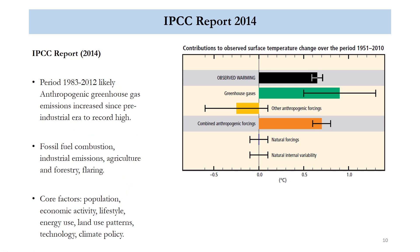The report also shows us what the relative contributions to temperature change are over this period. Here we have a graph showing — if we read it vertically from top to bottom — each of the different categories and their contribution to changes in temperature. We have greenhouse gases up here on this diagram with an estimate of their contribution, and then we have anthropogenic forcing. When they use the term 'anthropogenic' they are talking about human-generated sources. It's telling us that the period 1983 to 2012 was likely the highest in terms of anthropogenically attributed emissions since the pre-industrial era.